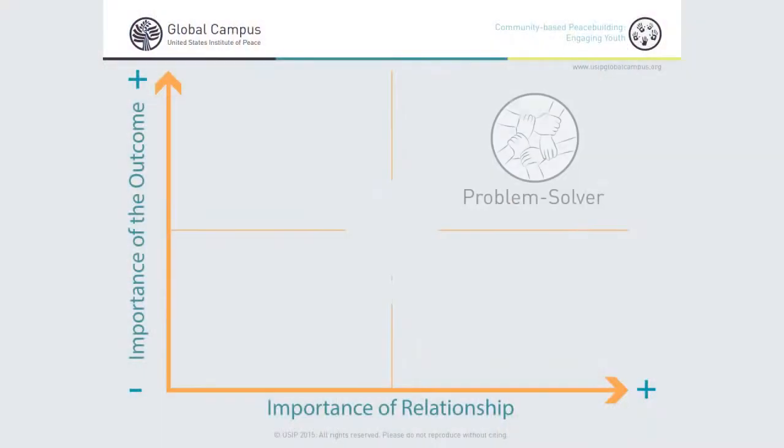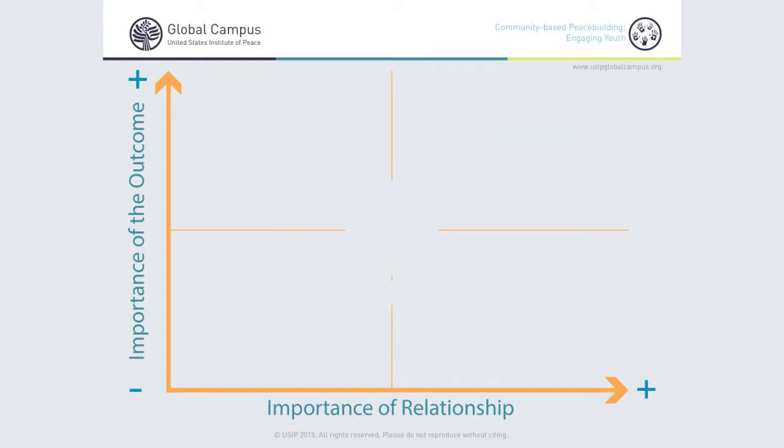The last style is problem solving, shown in the upper right corner of the graph. Problem solvers tend to look for the best of everything. A problem solver is somebody who is very strongly invested in both the relationship and the outcome of the conflict, putting maximum effort into maintaining the relationship and getting the outcome that they want.